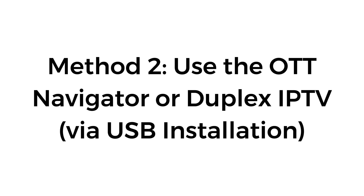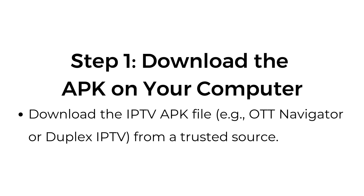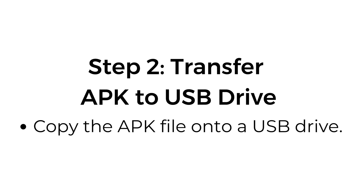Method number two: use OTT Navigator or Duplex IPTV via USB installation. If the Smart IPTV app isn't available on your TV, you can try installing apps like OTT Navigator IPTV or Duplex IPTV through a USB drive. Step number one, download the APK on your computer. Download the IPTV APK file from a trusted source.